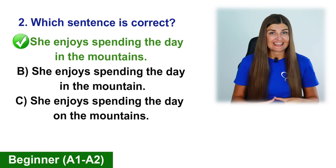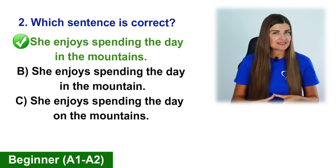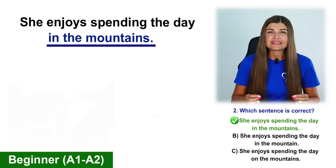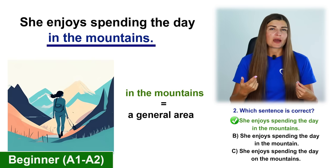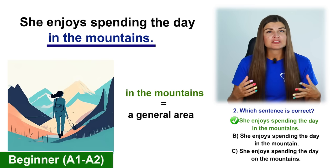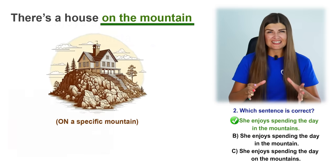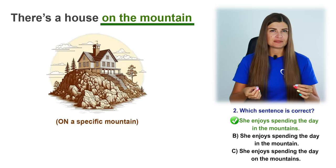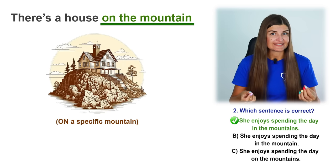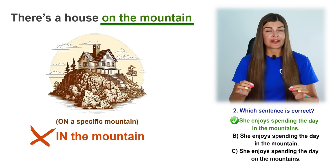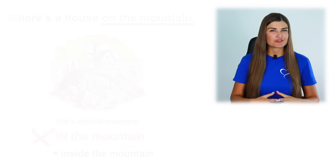The correct sentence is A: She enjoys spending the day in the mountains. In the mountains means a general area — we are not talking about one specific mountain, we are talking about the area. When we are talking about a specific mountain, we say on the mountain. For example, there is a house on the mountain. In the mountain is not correct because this means inside the mountain.